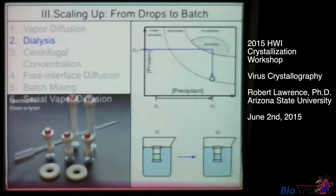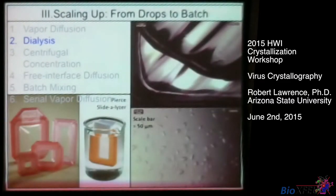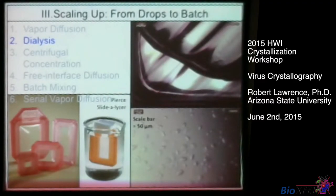These are called Float-a-Lyzer devices — they work well because the volume doesn't change. I've also had success using dialysis cassettes; you just inject your sample with a needle. Here's a look at some Sindbis virus crystals I formed in the dialysis cassette by transferring from what I learned in vapor diffusion drops and doing the math. They turned out to be larger than they would have been from vapor diffusion, but not everything transfers directly — you may still need to tweak things to control crystal size.